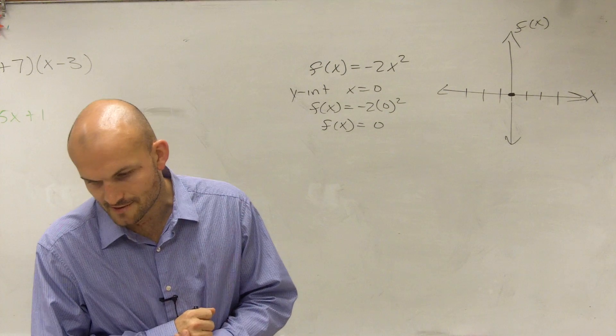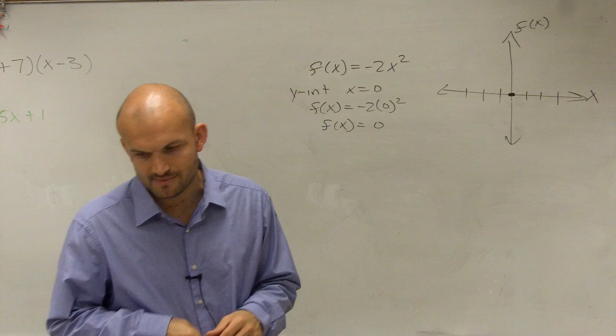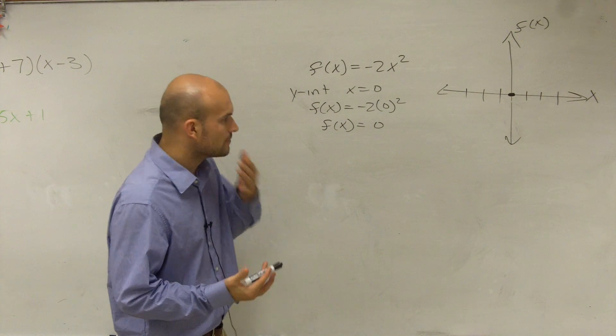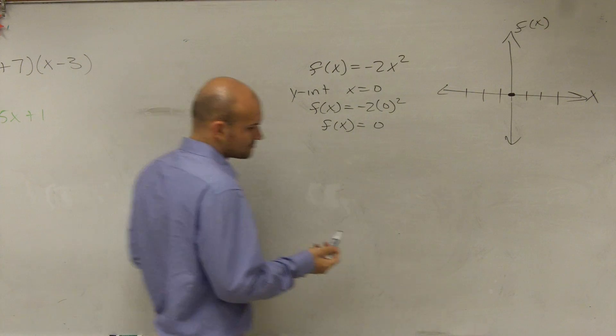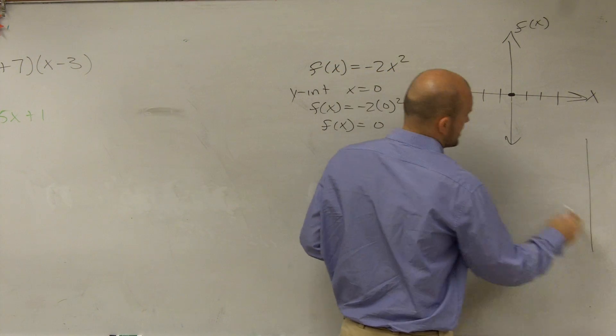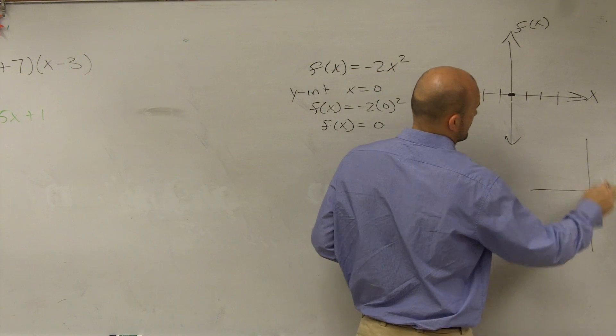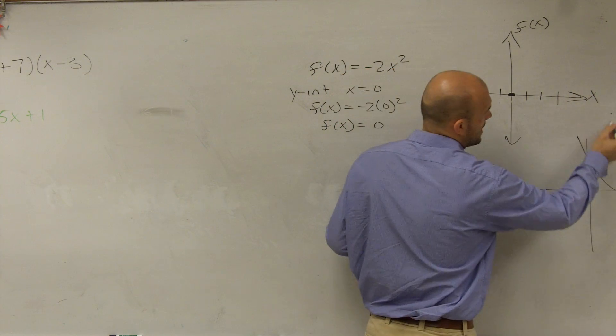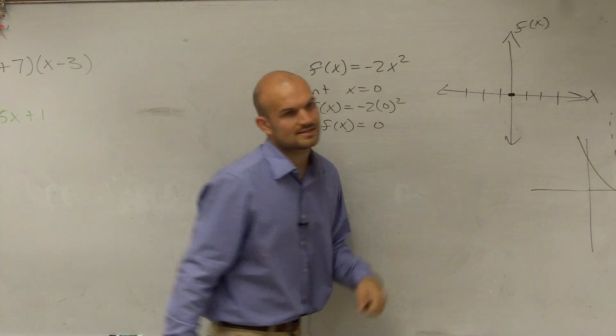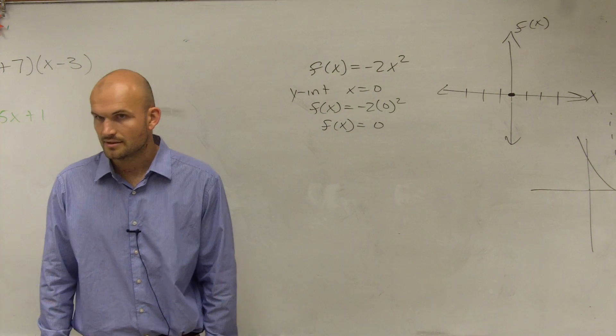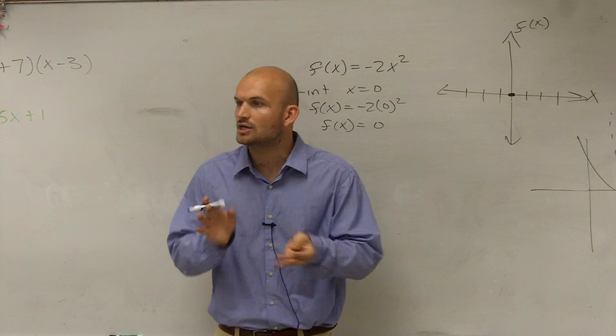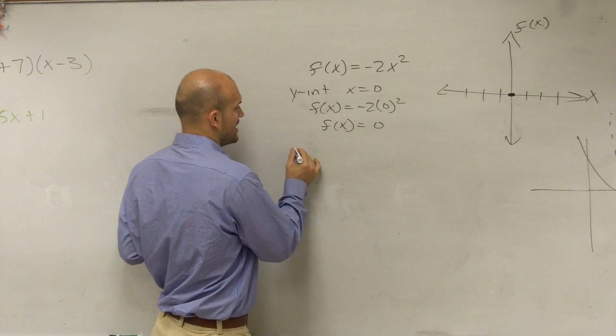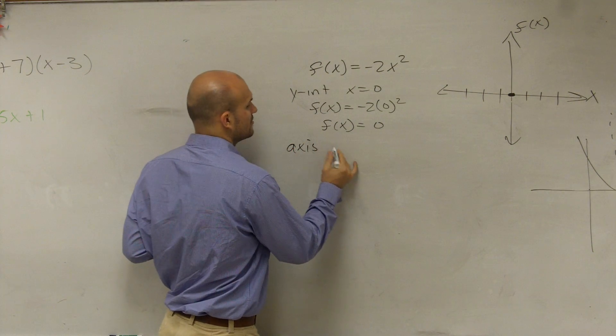So then the next thing is the equation of the axis of symmetry and the x-coordinate of the vertex. Remember, ladies and gentlemen, we're going to have a parabola. A parabola looks something like that. Every parabola has an axis of symmetry, right? Every parabola has a line that we can directly cut that parabola in half. There is a formula we had for the axis of symmetry. Does anybody remember it?